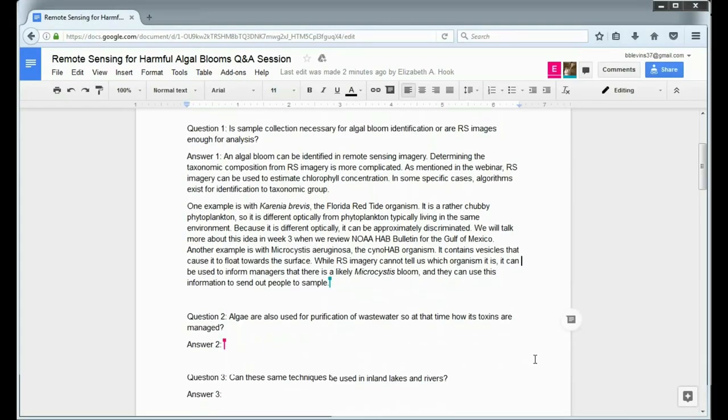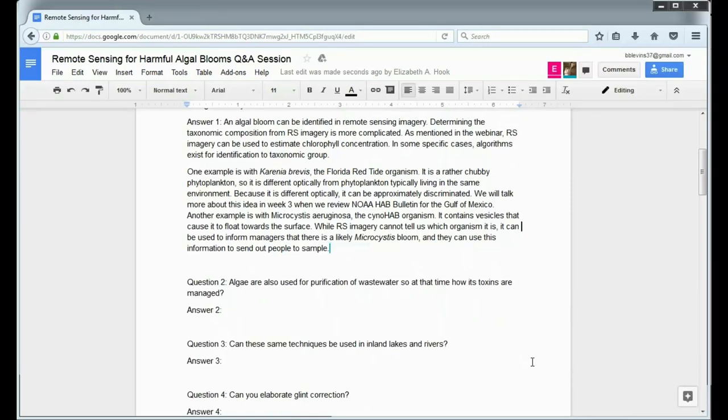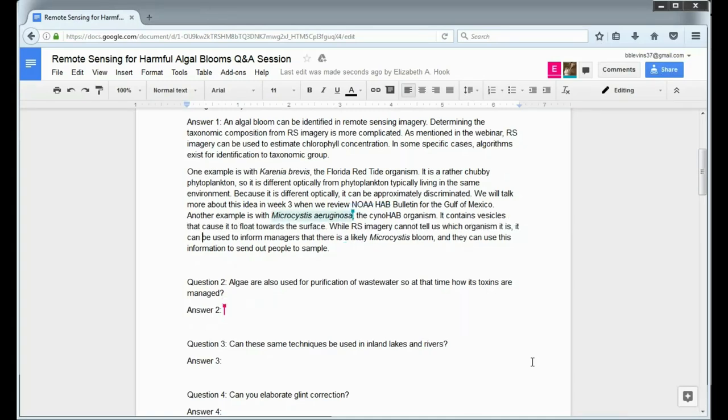And so when we get to week three, we're going to talk about this a little bit more. When we talk about the NOAA HAB Bulletin for the Gulf of Mexico, they can take advantage of that to get a better idea if that's what's there. Another example is with microcystis, and it's the cyanohab organism that we mentioned, and it contains these little gas vesicles that cause it to rise to the surface. And it gives us this great, really distinctive surface scum. There are other scum-forming cyanobacteria, so this is in no way a definitive way to identify if it's microcystis. But if you do have microcystis in an environment, and you are identifying these scums, then that can be one way that it can help you in your adaptive sampling, or in other words, how you send people out in the field to sample for that particular organism.